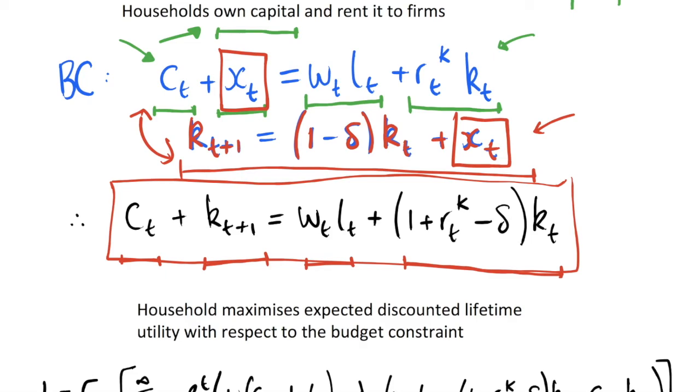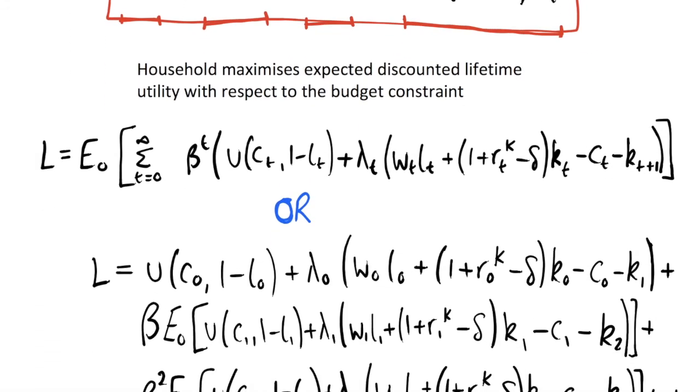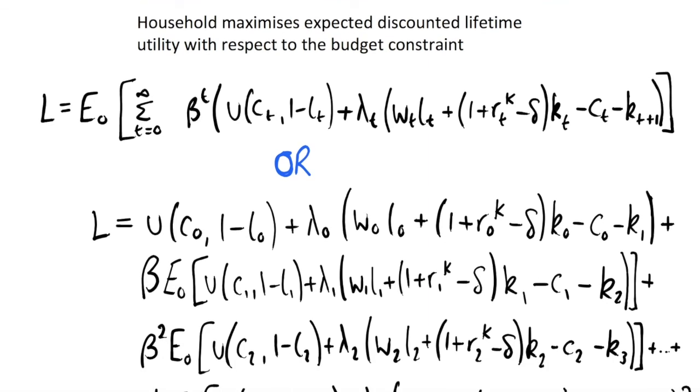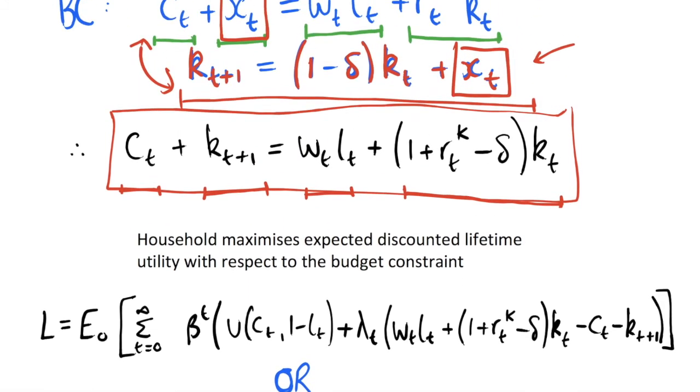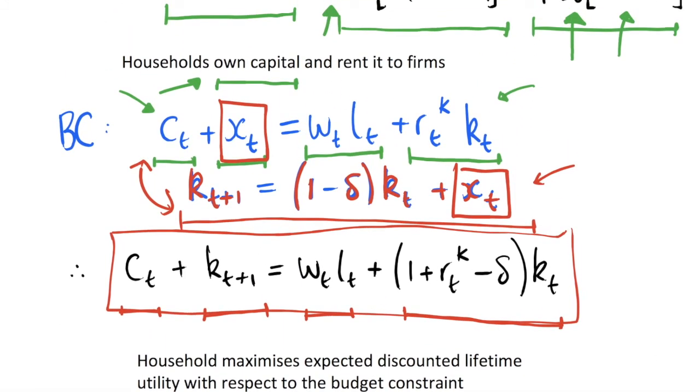We now have a basic model of what the real business cycle model looks like. We have the firm side and their problem which is maximizing expected lifetime discounted profits, and we have the household side which is maximizing the expected infinite additively separable utility function with respect to this budget constraint. When we solve all of that, we're going to get out some interesting business cycle dynamics. We can formulate a Lagrangian problem and start to solve this. I will do that in the next video because these videos are going to get very long if I start to do all of that. Check out the future video and the playlist for more on the real business cycle models. Make sure to leave a like if this was at all useful and subscribe for plenty more videos.